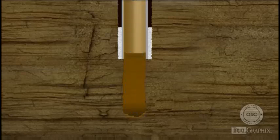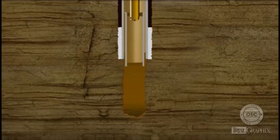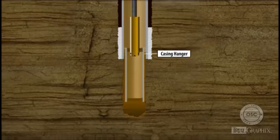The crew attaches the top of the casing string to the well with a casing hanger. Then the crew cements the bottom of the casing string into place.